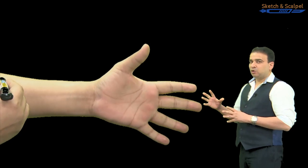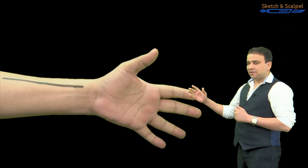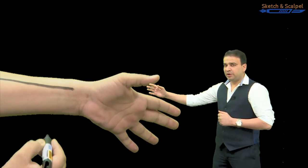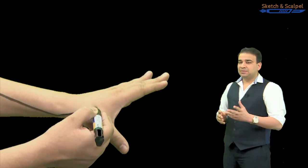So guys, in this we are going to talk about how the arterial arches are formed. Now look at the radial artery. It is running on the lateral side, but instead of reaching the flexor retinaculum, the radial artery turns backward and goes into the anatomical snuff box.